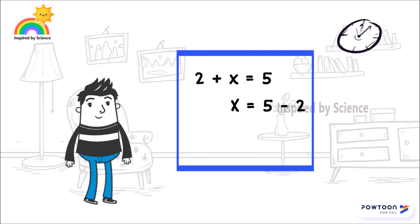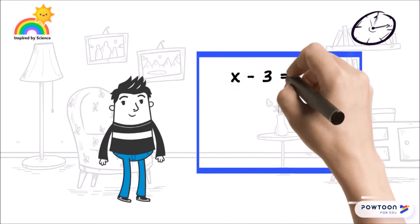5 minus 2 is 3, therefore x is 3. Here's an example with a minus sign: x minus 3 equals 7.